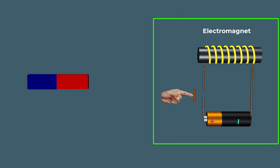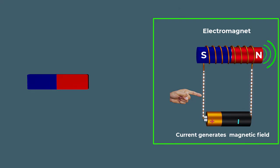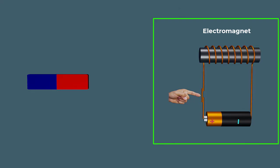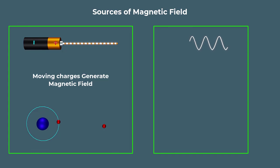The current generates a magnetic field, but the magnetism disappears once the current is turned off. A magnetic field is produced in two ways: by the movement of electric charges, or by changing electric fields.